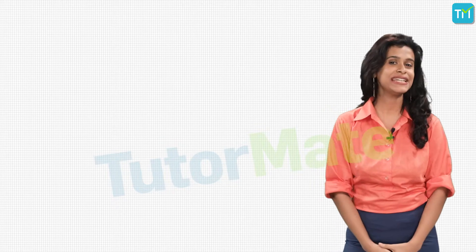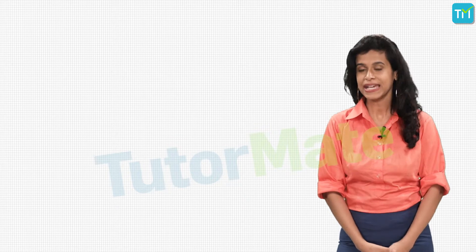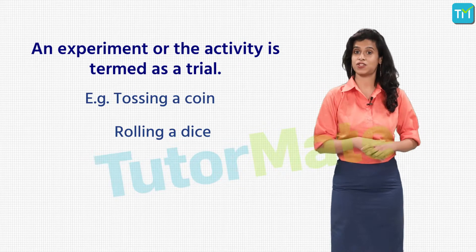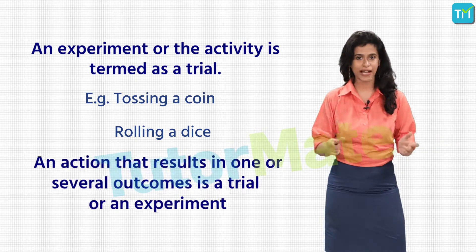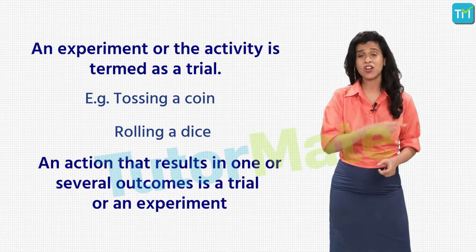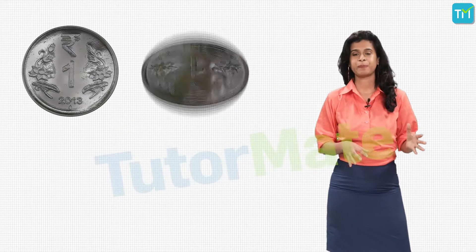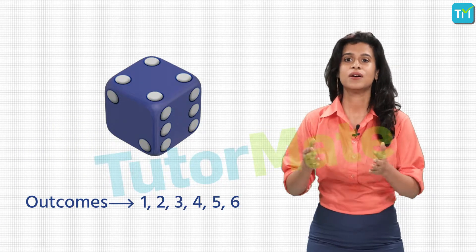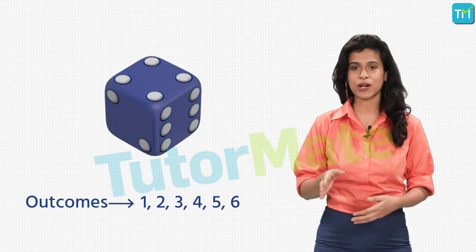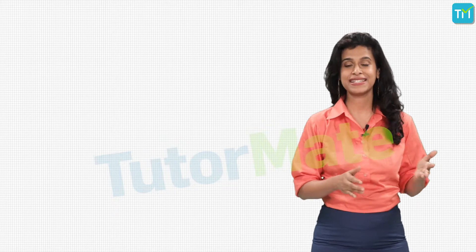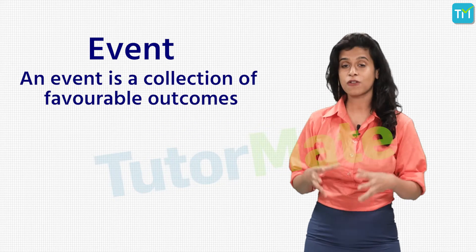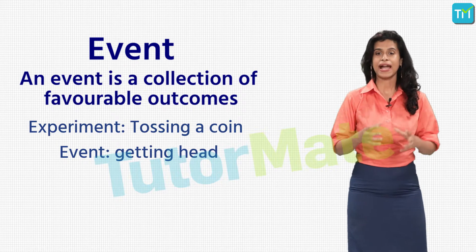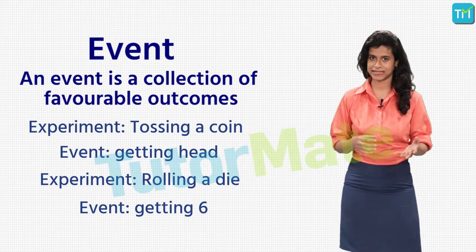From these two experiments, let's derive the expression for probability and define some related terms. The activity is termed a trial — tossing a coin is a trial, rolling a dice is a trial. We define a trial as an action which results in one or several outcomes. When I toss a coin there are only two outcomes: heads and tails. When I roll a dice I can get 1, 2, 3, 4, 5, or 6 — there is no seventh outcome. An event is defined as a collection of favorable outcomes — getting a head when tossing a coin, or getting a 6 when rolling a dice.